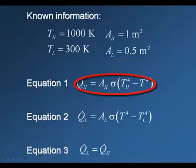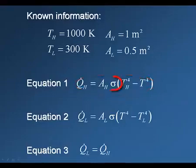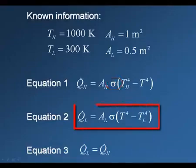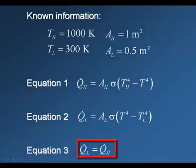The rate of radiation heat transfer to the surface from TH is given by this equation, where sigma is the Stefan-Boltzmann constant, which is equal to 5.67 times 10 to the minus 8 watts per meter squared per Kelvin to the fourth. Note that sigma is one of many built-in constants in EES and can be accessed using sigma with a hash tag after it. The rate of radiation heat transfer from the surface to TL is given by this equation. The surface is at steady state and therefore an energy balance provides the final equation that we need to solve the problem.